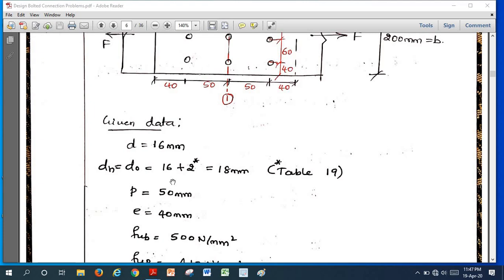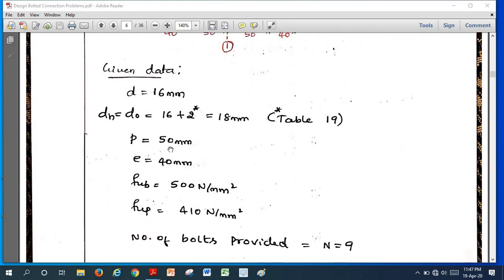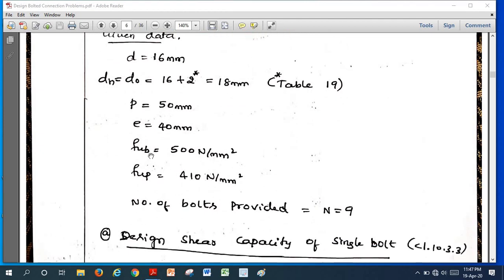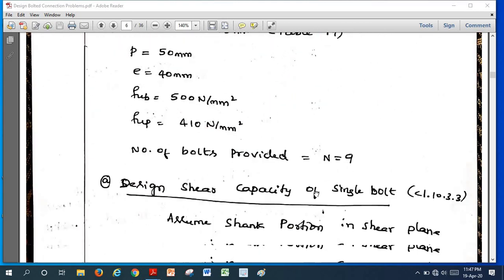Here the given diameter is 16 mm and D₀, 16 plus clearance, we should take from table number 19 of IS-800, that will comes out to be 18 millimeter. Pitch is 50 millimeter, end distance is 40 millimeter. Ultimate strength of the bolt, since the bolt grade is 5.6, we should take 500 N/mm². Ultimate strength of the plate 410 N/mm². Number of bolts provided here, total number of bolts they have provided here is 9, that is capital N = 9.